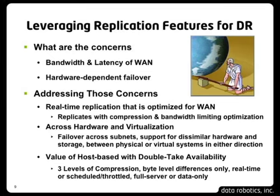Double-Take has bandwidth limiting and compression built in as a configurable option — not an upcharge, it's part of the product. Being host-based, different types of data compress differently. For example, databases or mail servers compress very well, while CAD drawings or images by nature don't compress at all. With host-based replication you can pick and choose what you do or don't compress. You can also enable bandwidth limiting to only use a certain percentage of the WAN during business hours and a different percentage after hours and weekends — all readily available through the GUI.